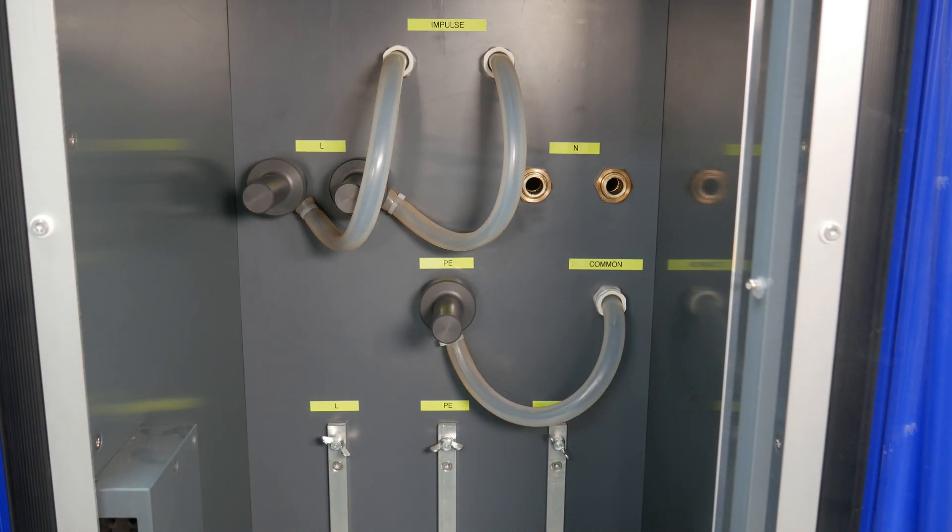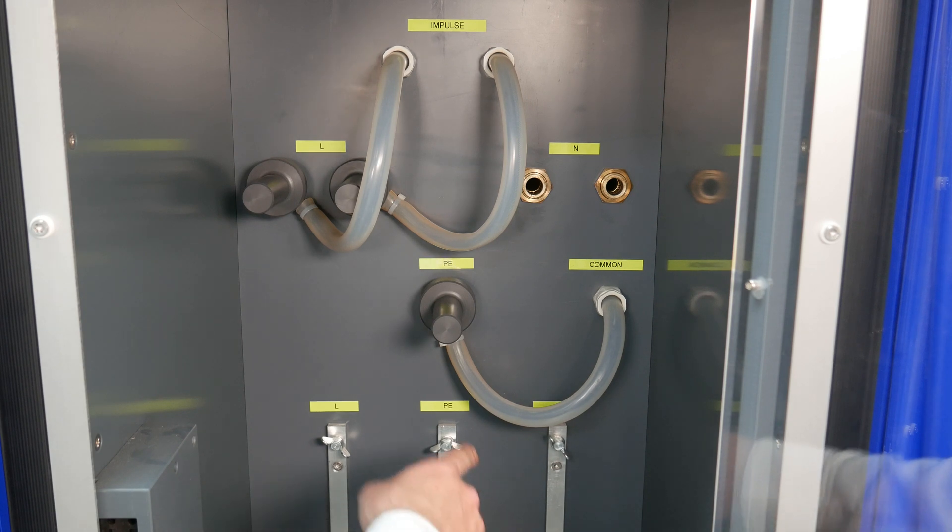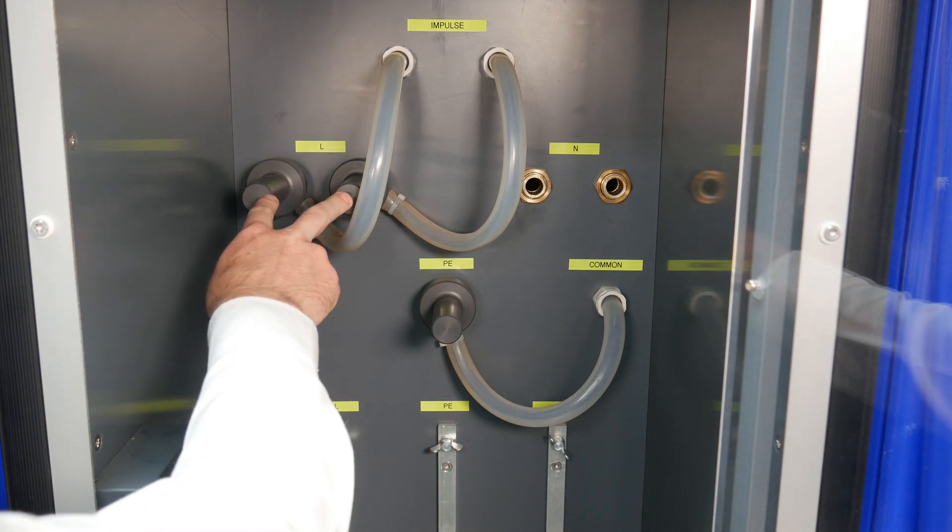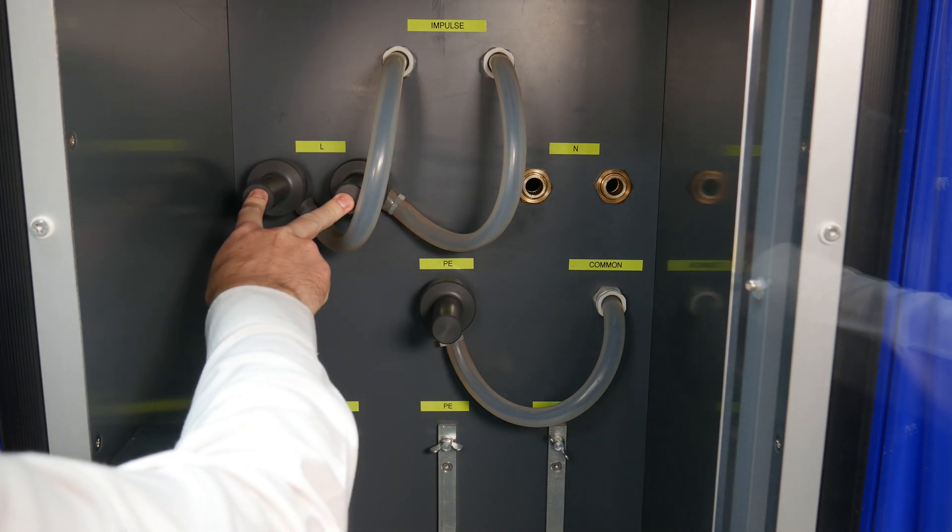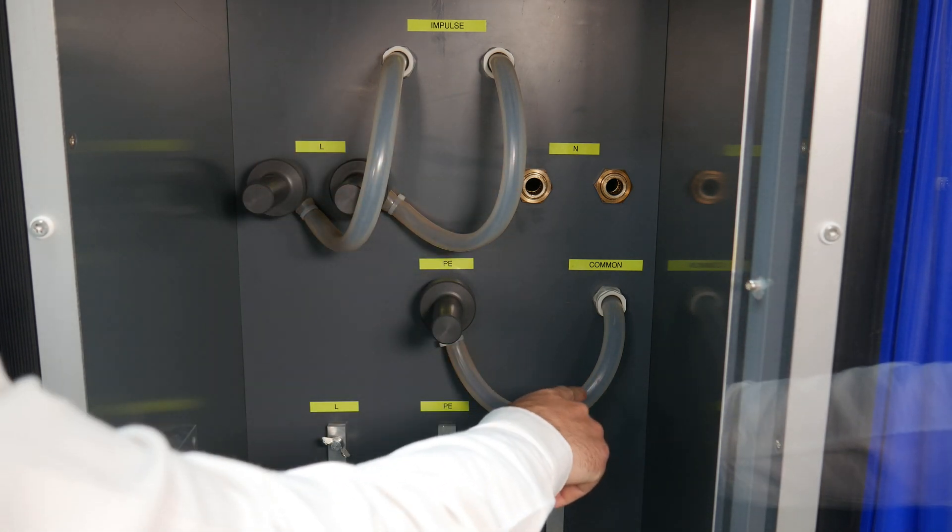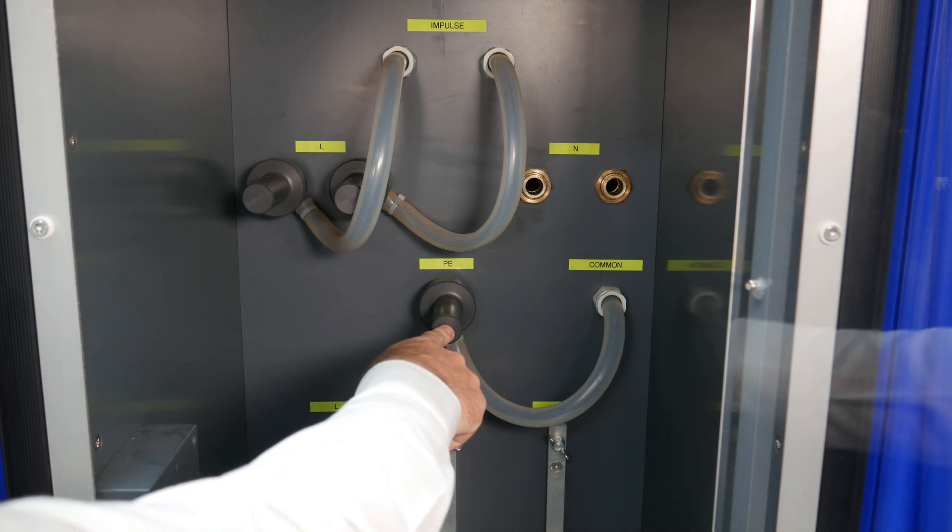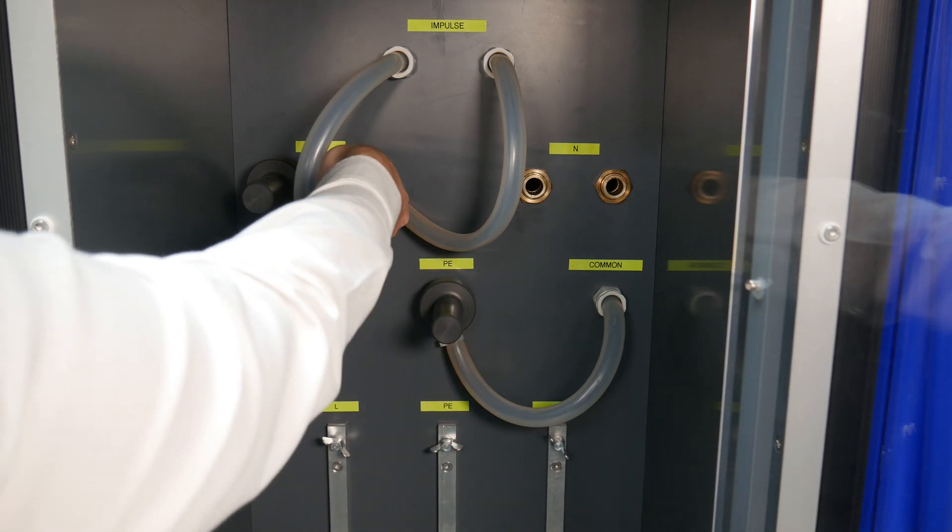Now up above from where you make your connections to your EUT we have our coupling modes. Right now we're currently wired on our impulse side to go to the line and our common side from the generator going to ground. So we're coupling from line to ground to change that.